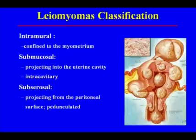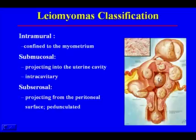Intramural fibroids are confined within the myometrium. Submucosal fibroids project into the uterine cavity, and when the whole fibroid is within the endometrial cavity, it's referred to as an intracavitary fibroid. Subserosal fibroids project from the peritoneal surface, and when the whole fibroid is outside the uterus on a pedicle, they're considered pedunculated fibroids.